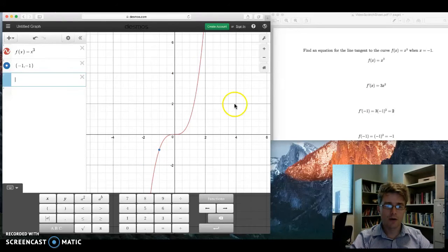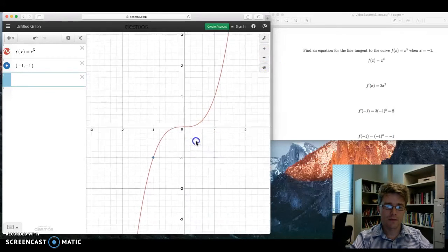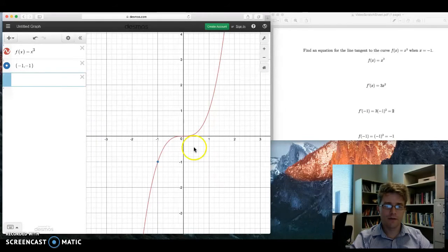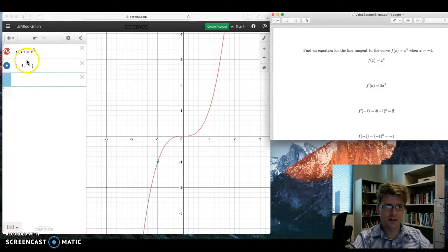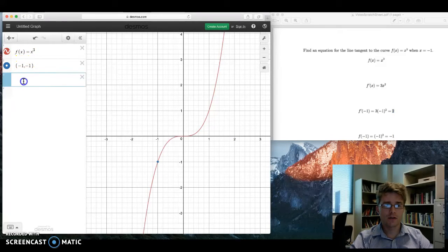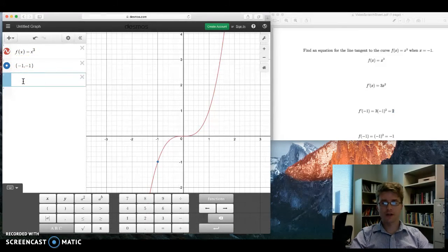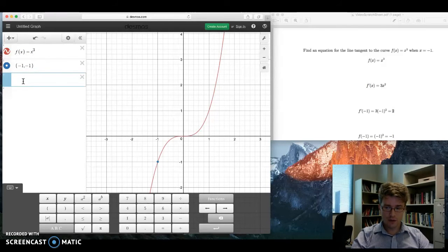We know the derivative is 3, not 2, at negative 1. And we know that the line goes through this point. The tangent line goes through this point. So we can use something from our algebra days called point-slope form to get the equation of this line.